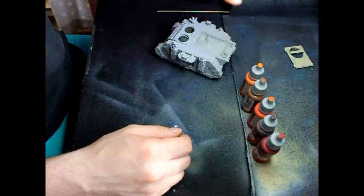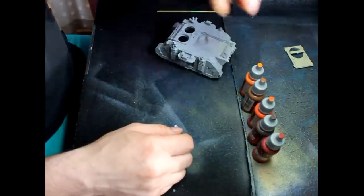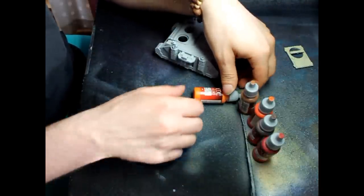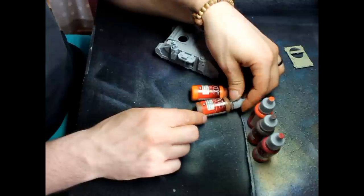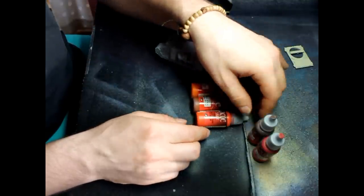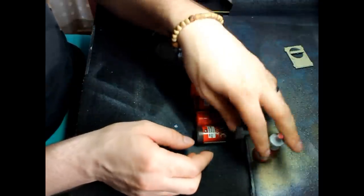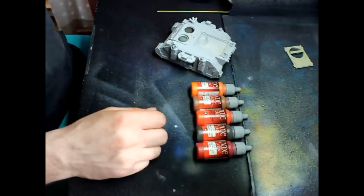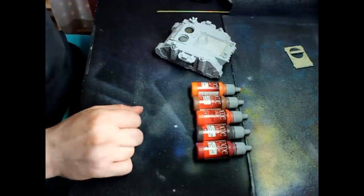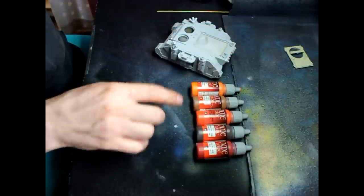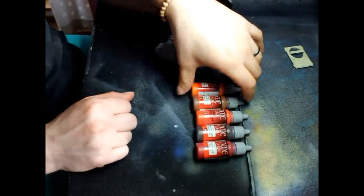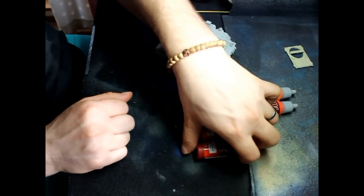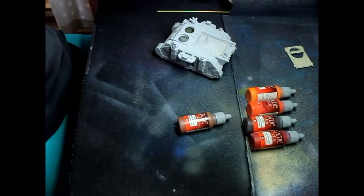So the things you're going to be needing for the paint part: I'm going to be using Orange Fire, Beastie Brown, Hot Orange, Charted Brown and Gory Red. Basically I'm going to mix all those paints and paint the whole model in those rusty colors. First of all, my base for this is going to be Beastie Brown, so I'm going to start with my Beastie Brown.